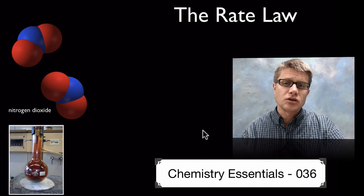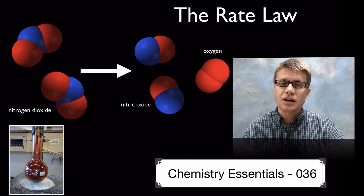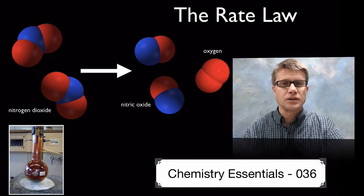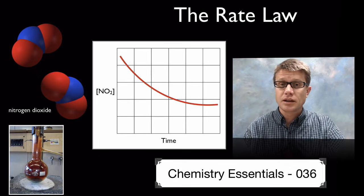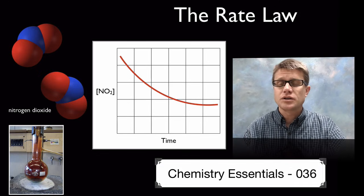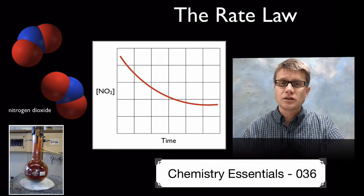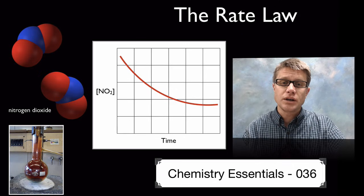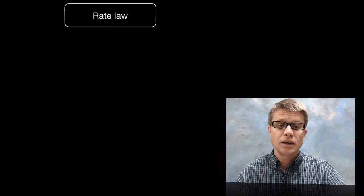But if we look at nitrogen dioxide and its rate as it's broken down into nitric oxide and oxygen, it follows a different curve. When there's a lot of nitrogen dioxide it proceeds really quickly, and when there's not much it slows down. Those two equations almost look identical, so there's no way to tell just by looking at a balanced equation how fast a reaction will proceed. That's an important thing to understand as we move forward with the rate law.